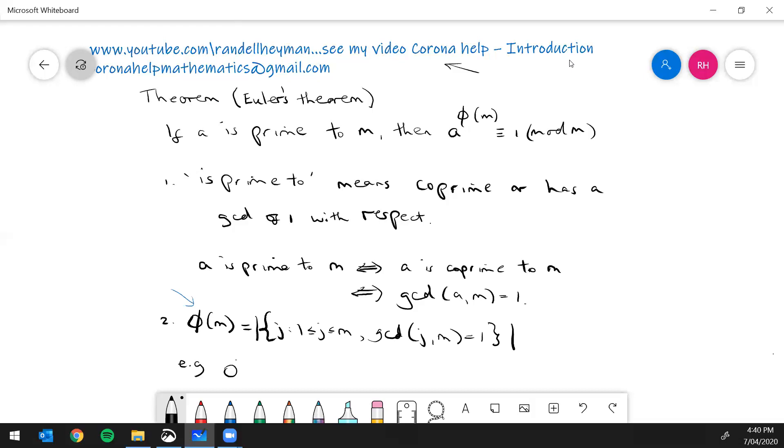Example: φ(6). So how many numbers between one and six inclusive have a gcd with six of one? Well one does, the gcd of one and six is one. Two doesn't, three doesn't, four doesn't, five does. So there's only two elements in the set so φ(6) equals two.